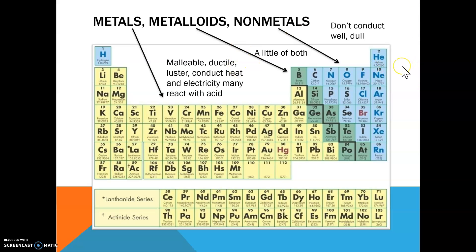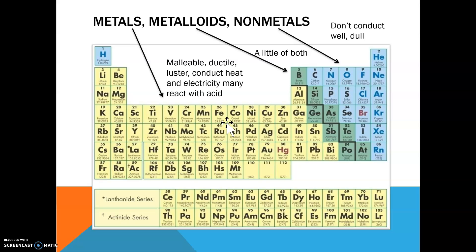Nonmetals kind of do the opposite. They're not malleable, not ductile, they're dull, and they don't conduct heat or electricity well. What about the metalloids? Well, sometimes you have properties that are a little bit of both. You looked at silicon — silicon was shiny like a metal, but it was brittle like a nonmetal. It also conducted electricity like a metal, but not as well as a metal. In fact, it's called a semiconductor, and we use it in computers because of that property.